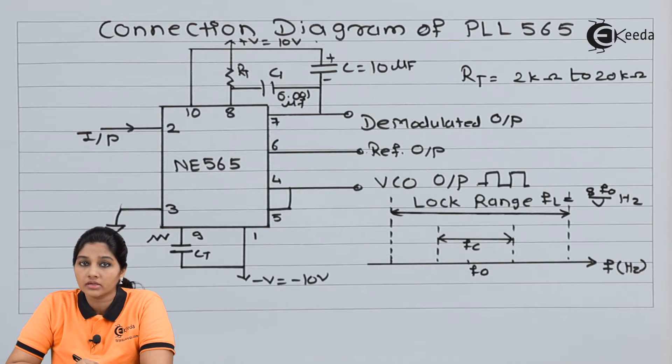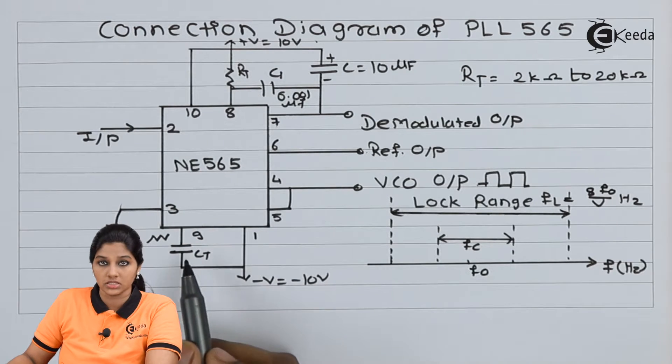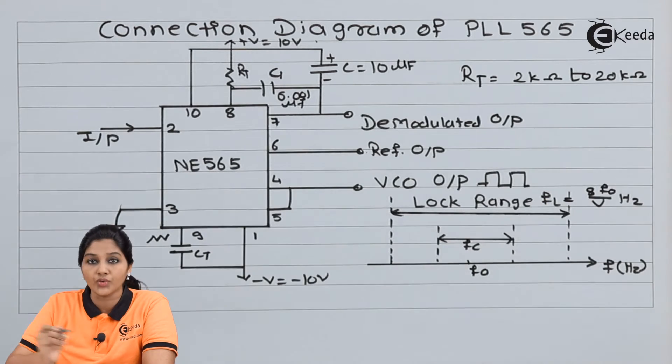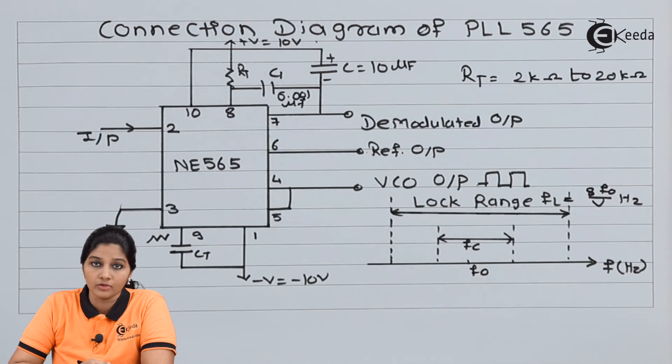There are two externally connected components: resistor RT and capacitor CT. The value of resistor RT can be between 2 kilo ohms to 20 kilo ohms. The capacitor C1 can have any value.